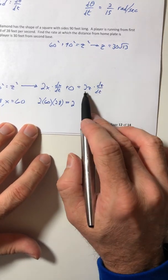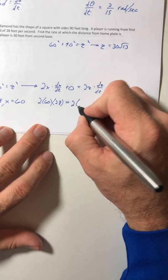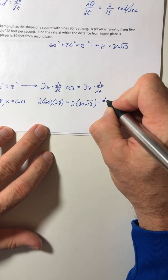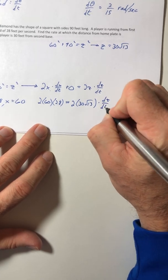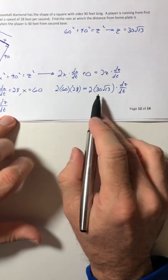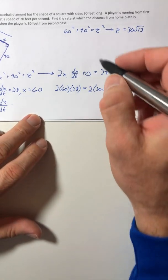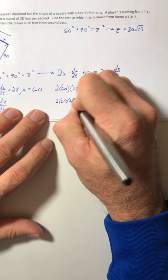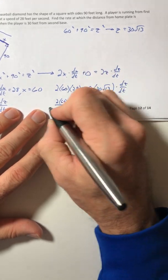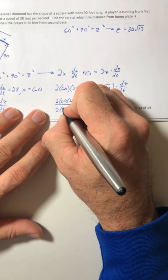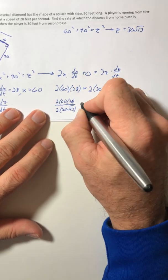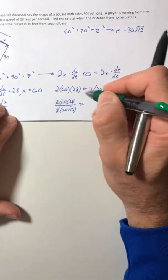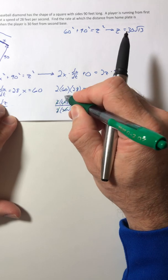So now that you know what Z is, stick it in. And then DZ DT is the only thing left, and we can now solve for it. So just divide by all of this. Simplify it down. The 2s cancel. 30 goes into 60 twice.